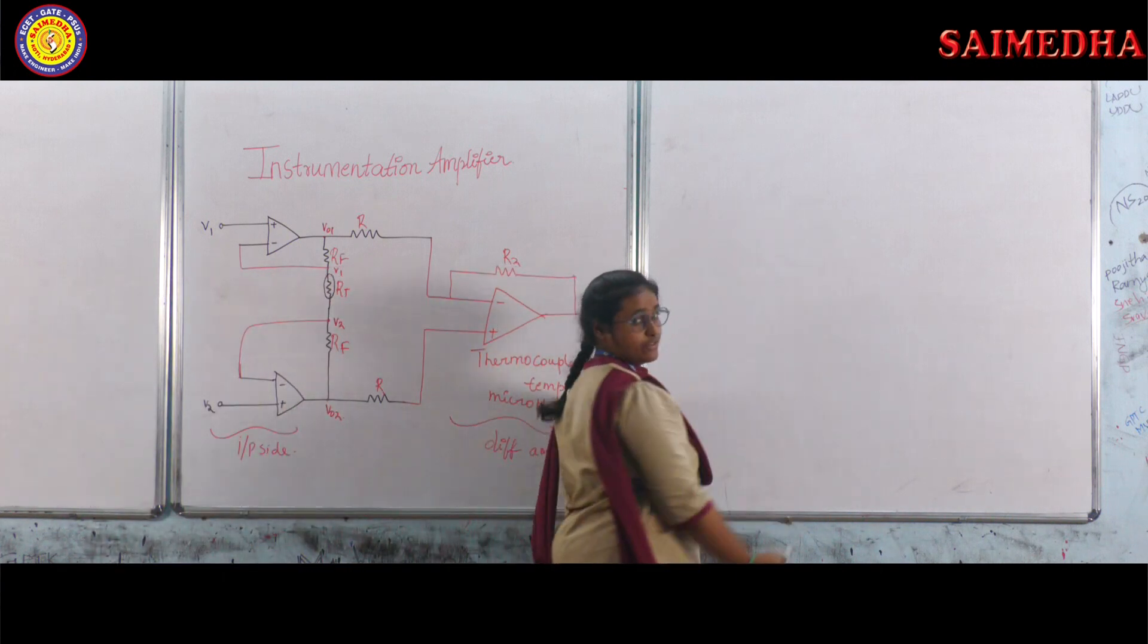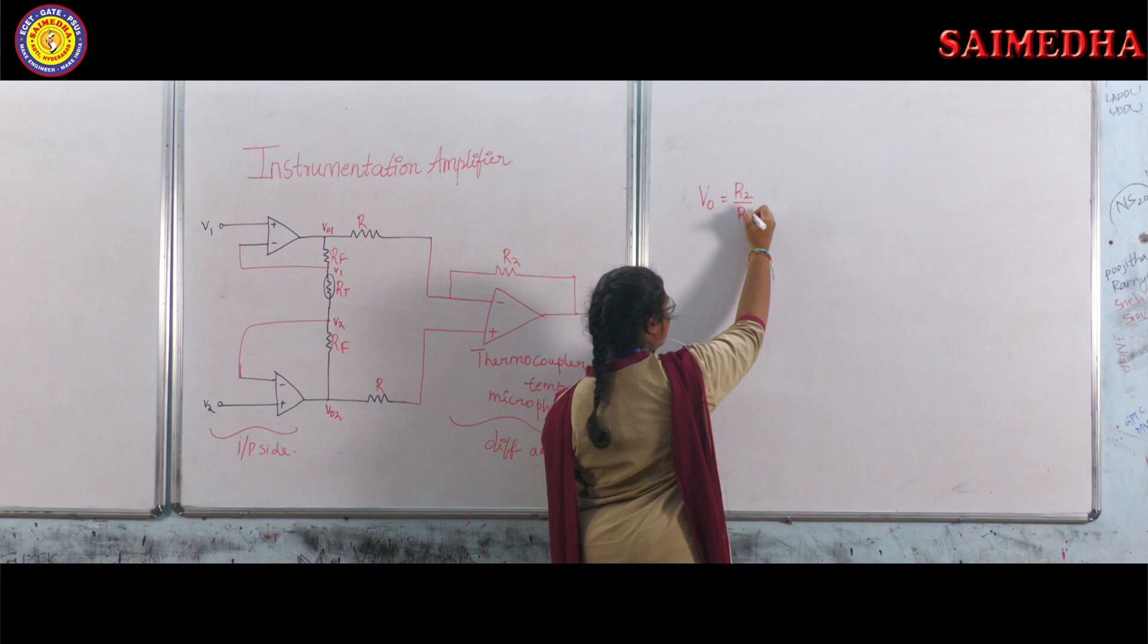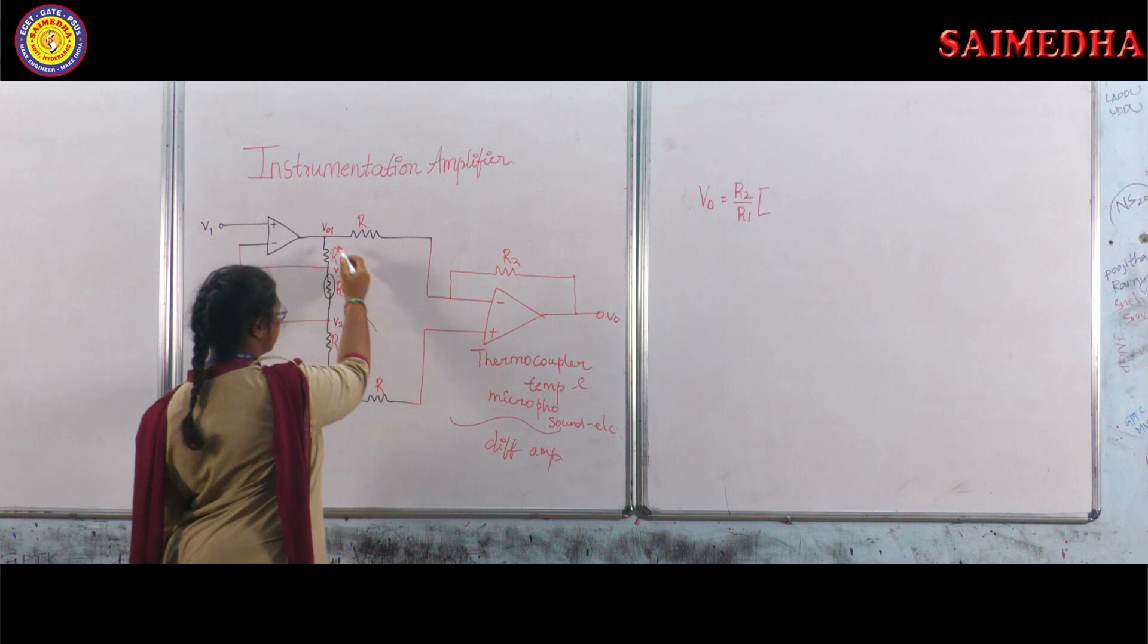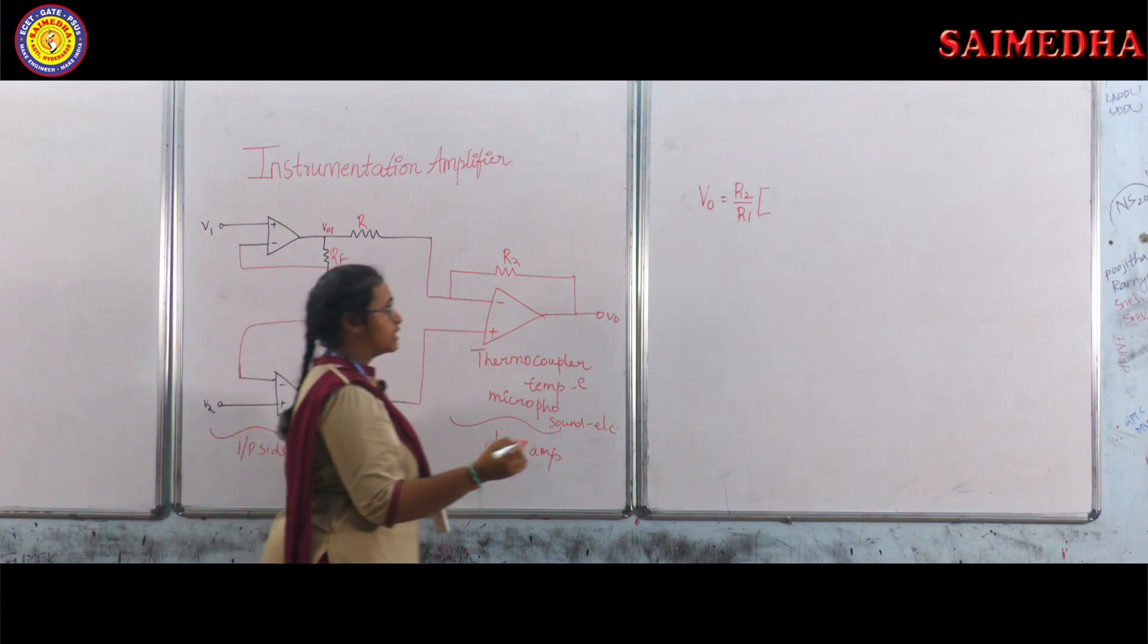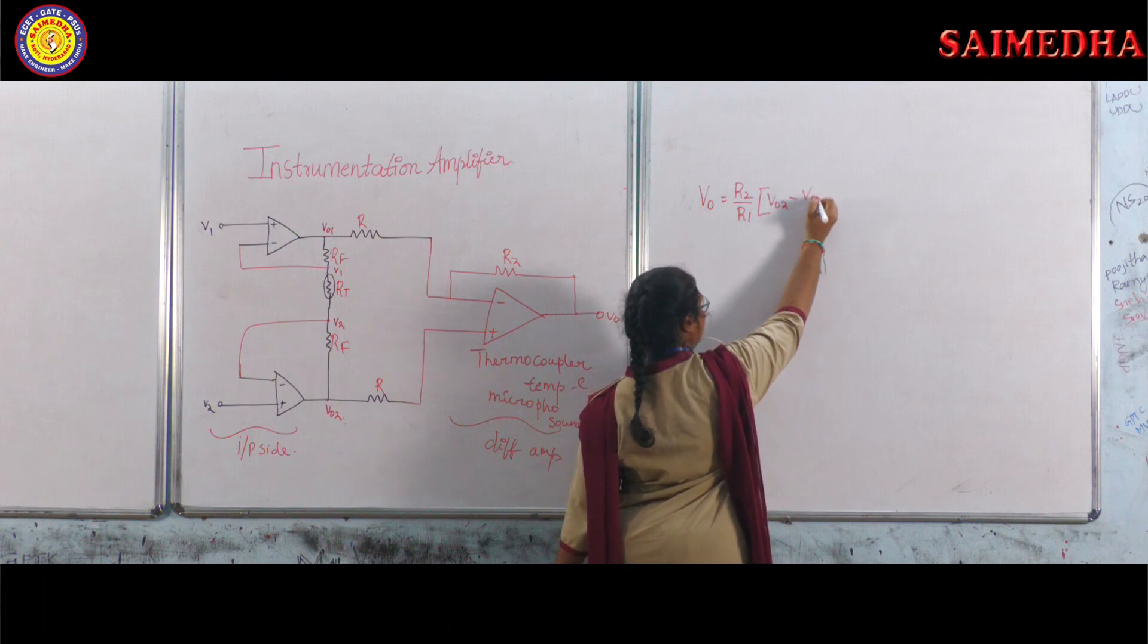We know that the output for a difference amplifier is Vout equals R2 by R1 into, here we are taking differences of voltages. Here we are considering this as well as this, so here we will take this as VO2 minus VO1.